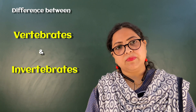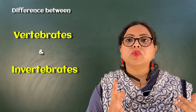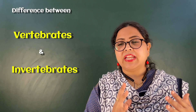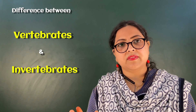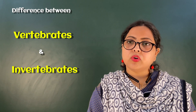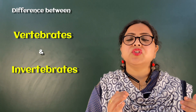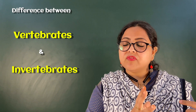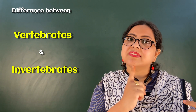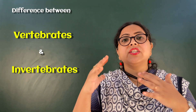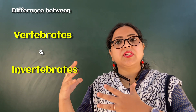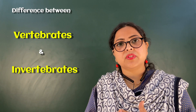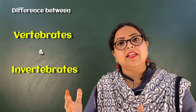In vertebrates, a true tail is present. In animals with a tail, the anus is located on the lower surface. In animals without a tail, the anus is in a terminal position.